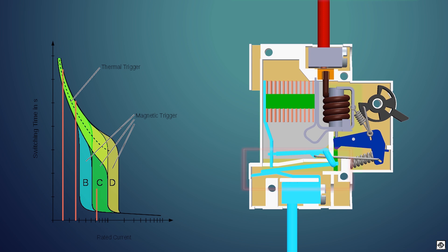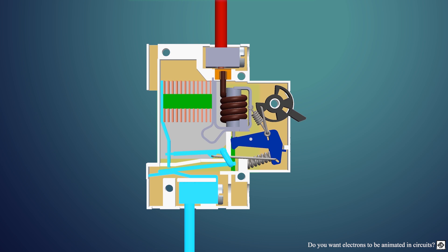So why do we need this solenoid trigger, as the bimetallic strip may protect in a short circuit? Because the bimetallic strip takes time to heat up and expand, and during a short circuit, time is very important. A short circuit needs to stop as soon as possible, hence we have the solenoid to trip the MCB instantly.